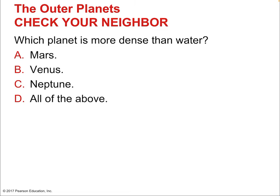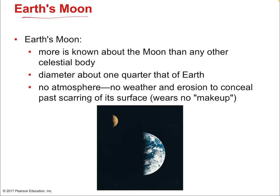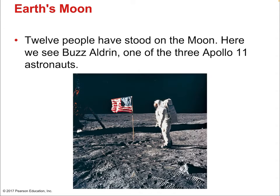Venus, Mars, and Neptune are all more dense than water — all of the above. The only planet that wasn't denser than water was Saturn. Now, Earth's moon: more is known about the moon than any other celestial body. Its diameter is about one-quarter that of Earth — about one-half that of Mars. It has no atmosphere at all, meaning no weather or erosion to conceal past scarring, which is why it has so many craters. Every impact is recorded, and the surface is a very fine dust called the regolith. Twelve people have stood on the moon.